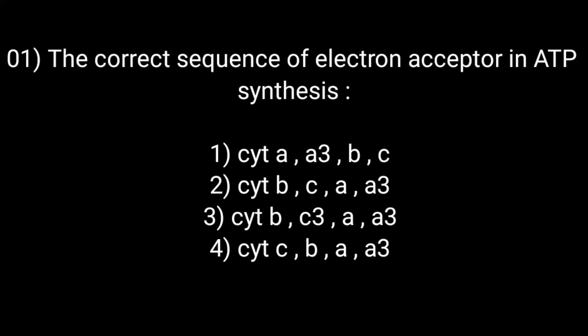The correct sequence of electron acceptors in ATP synthesis. Option first: cytochrome A, A3, B, C. Option second: cytochrome B, C, A, A3.